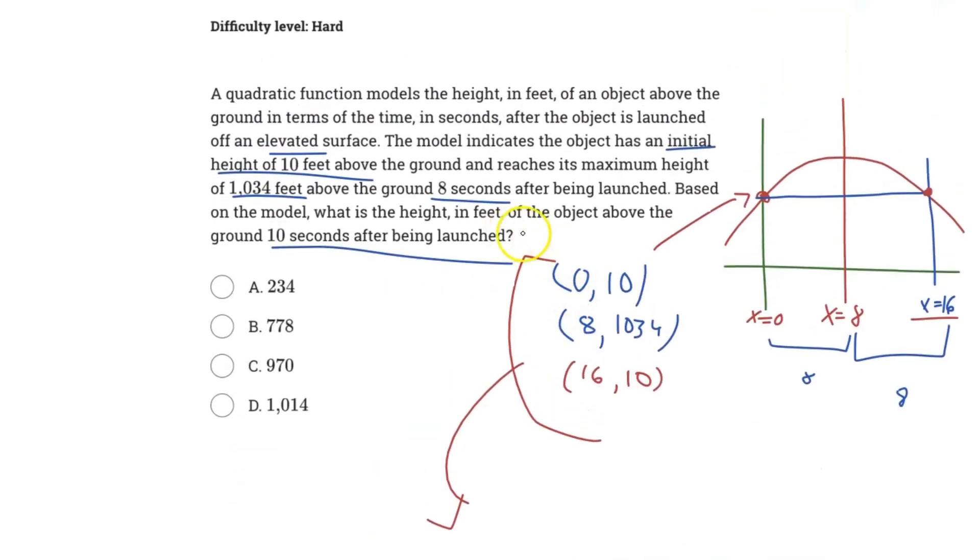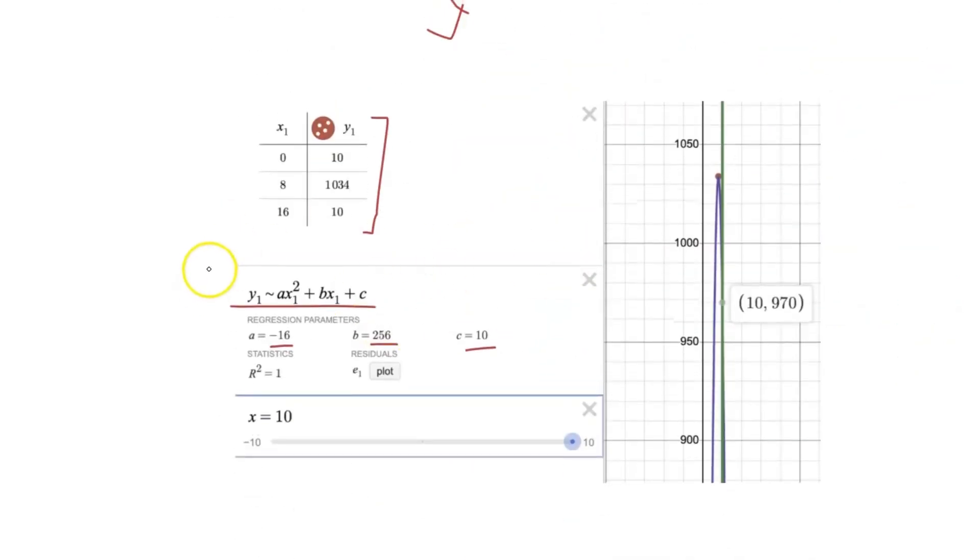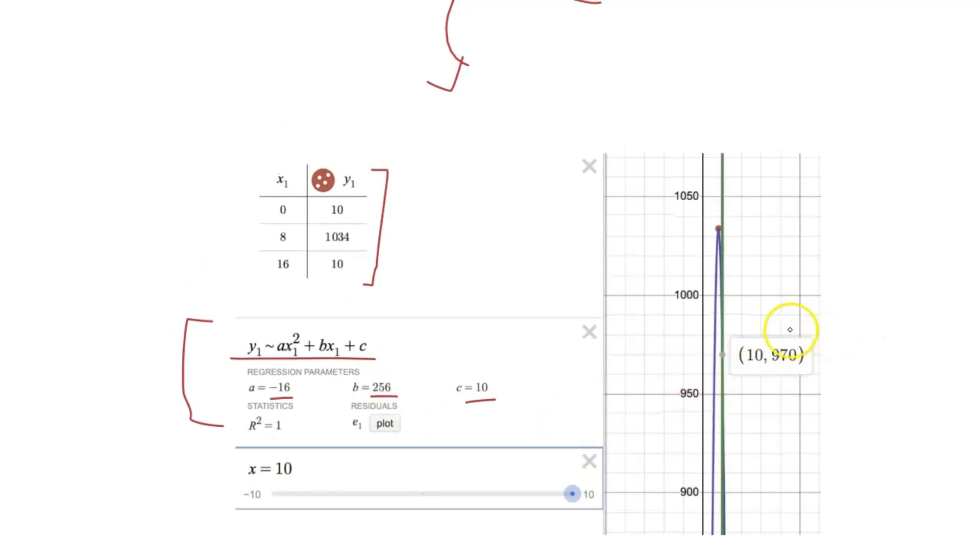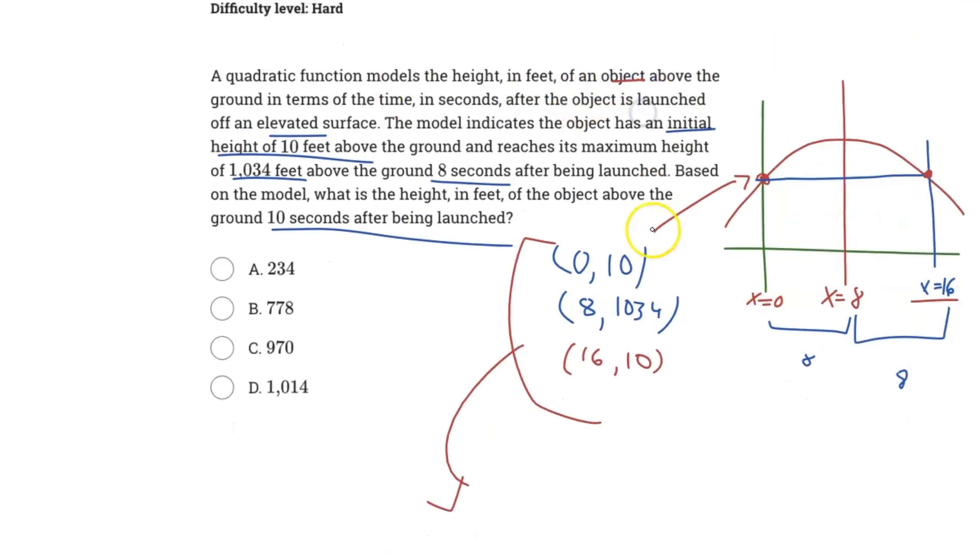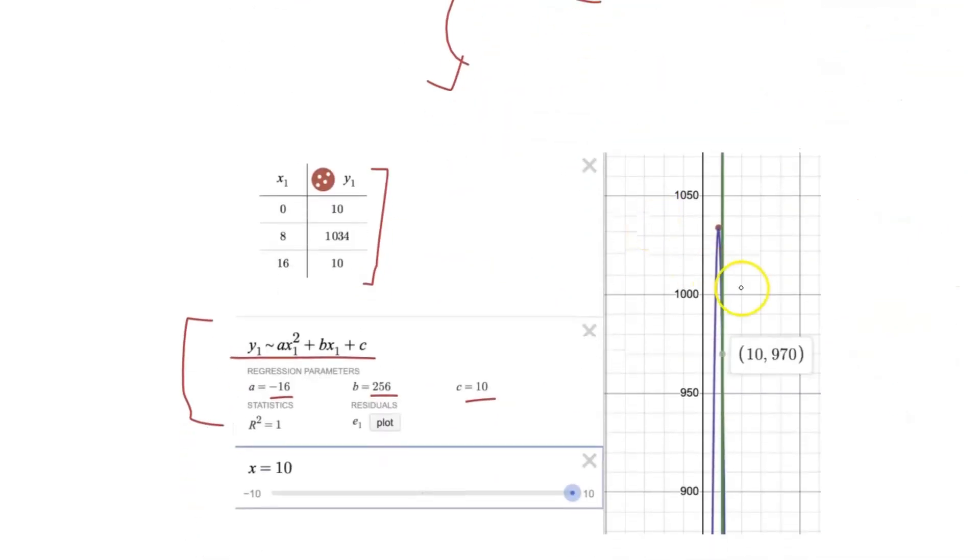But the question is asking, what is the height in feet of the object above the ground 10 seconds after being launched? So since we already have the function that represents the problem, all we have to find is the value of the object, or the height of the object 10 seconds after being launched, when x equals 10.